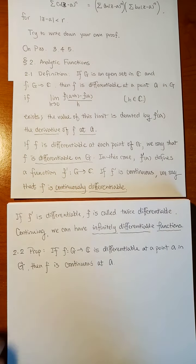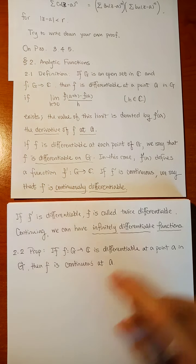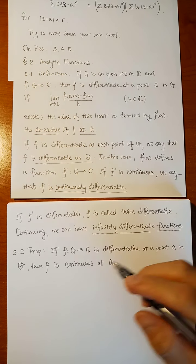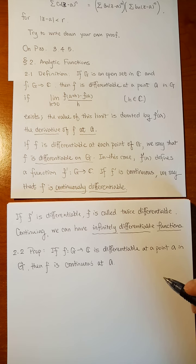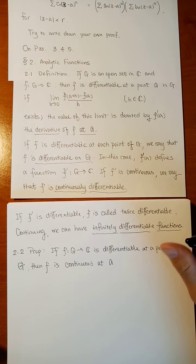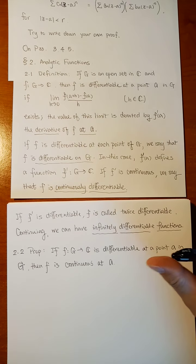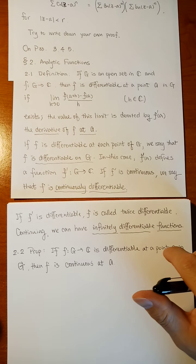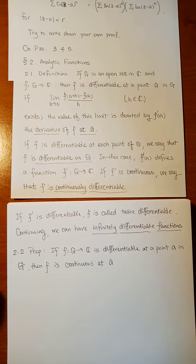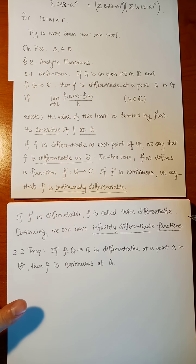Why bother repeating the proof? Because the result we learned was for the real line — only two directions, left and right. Here we're talking about the complex plane, which is two-dimensional. Whenever you talk about continuity here, it's already very complex. So it may or may not have the same result. Fortunately, for this proposition, you will have the same result.